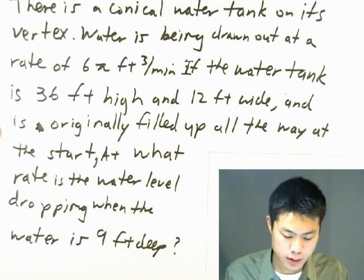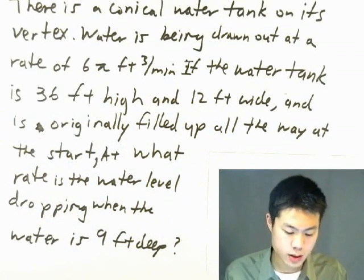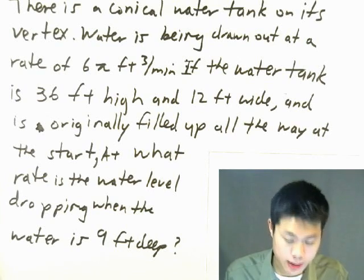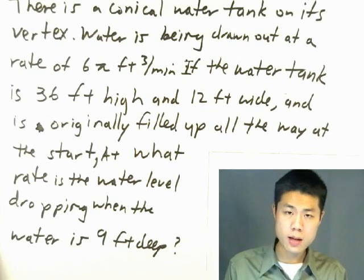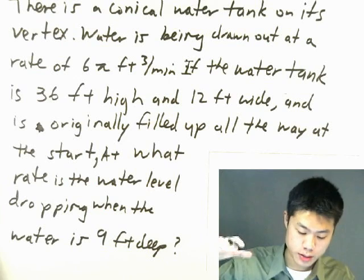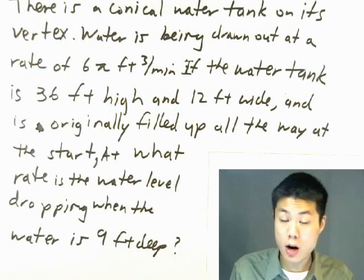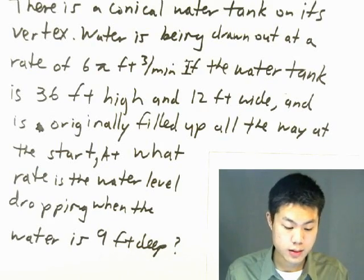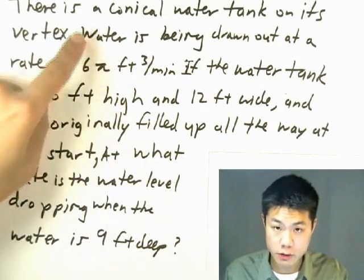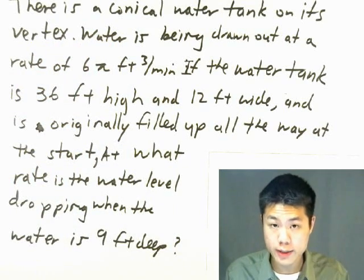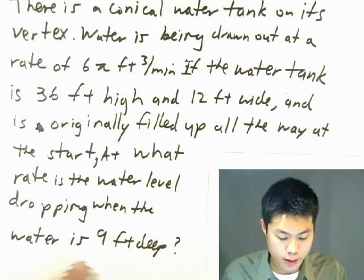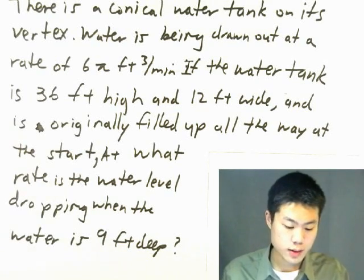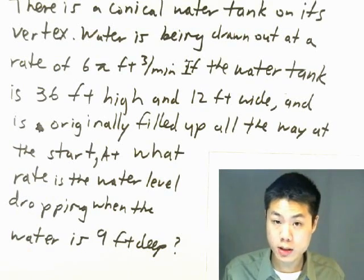Well, since it's a conical water tank, its cross-sectional slice is a circle. Remember that? So radius. So, we're going to use radius. And this is a diameter here, so the radius is going to be half that. And is originally filled up all the way at the start. Okay, so water tank is originally filled to its max. The question is, at what rate is the water level dropping?